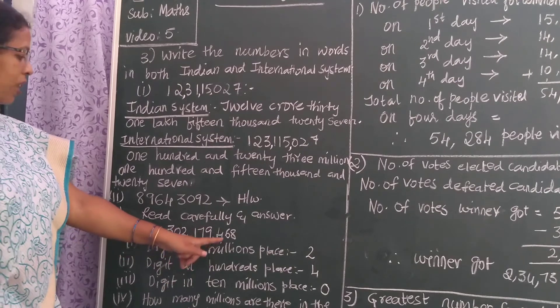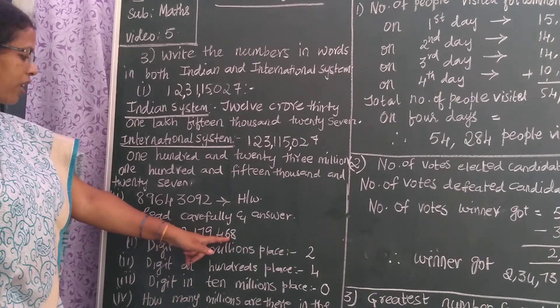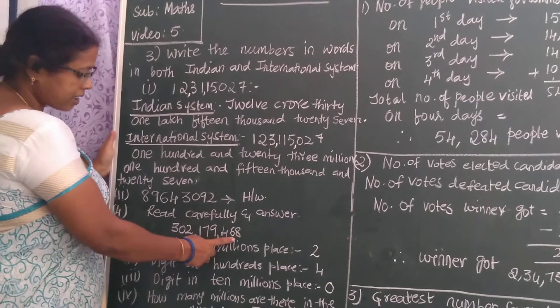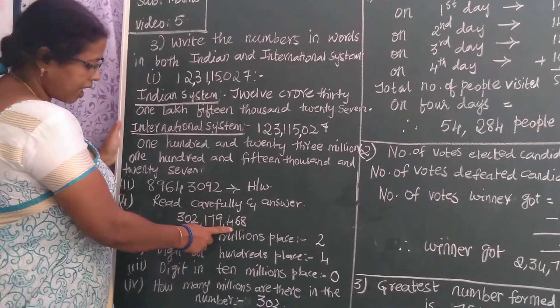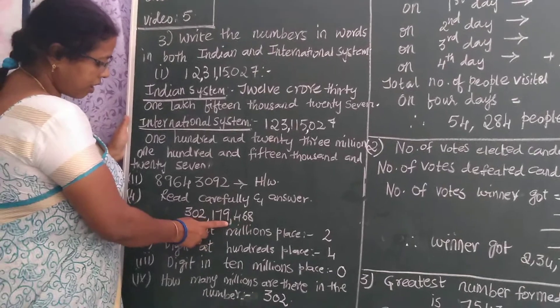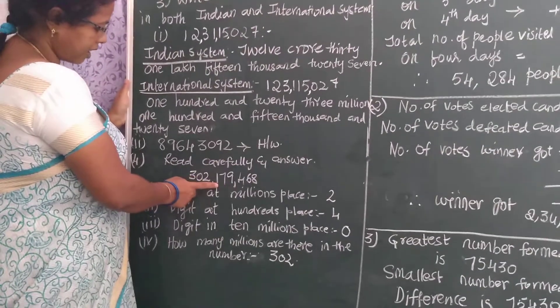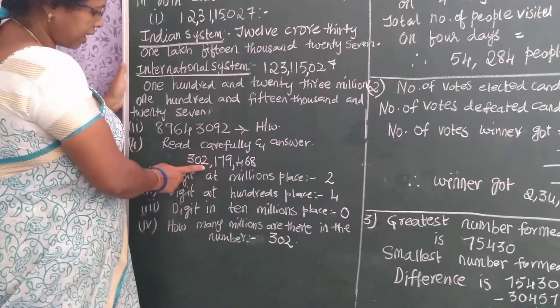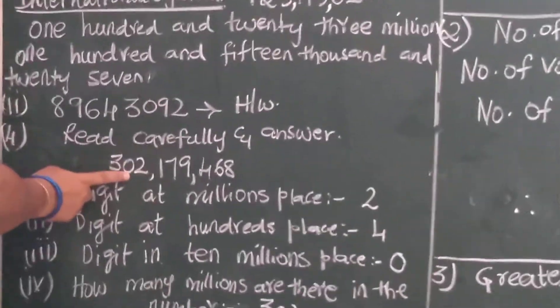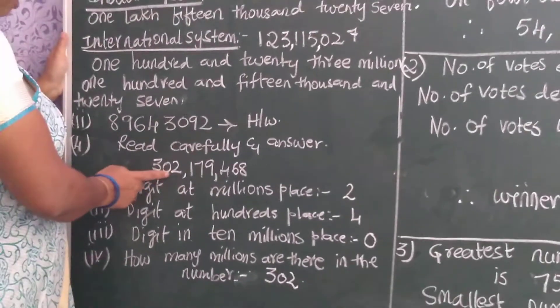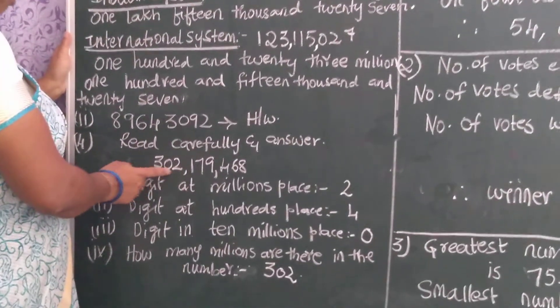Once more I will read the place values for your sake: ones, tens, hundreds, thousands, ten thousands, hundred thousands, millions, ten millions, and three hundred and two hundred millions.